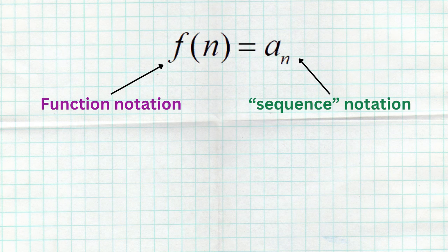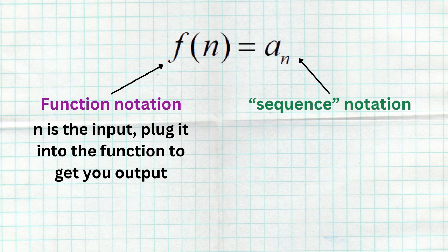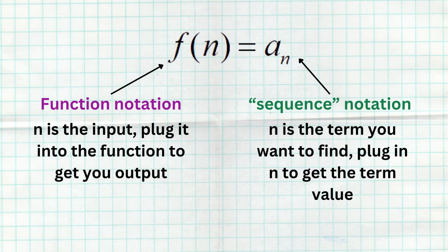Function notation is f of n — n is the input, you put n into the function and get an output. In sequence notation we use a letter like a with a subscript n, written a sub n. All that means is a sub n is a formula for any term of the sequence we want. If you want the first term you plug in one; the fifth term you plug in five. There's really no difference between these two notations, with the key difference being that the domain of a sequence is only positive whole numbers.